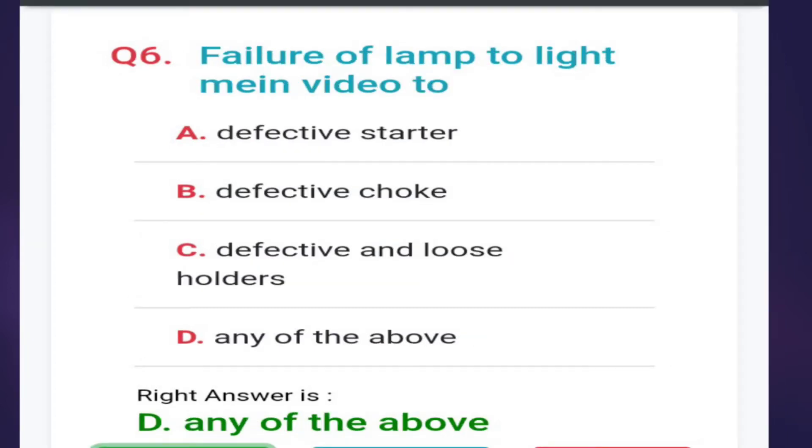Sixth: failure of lamp to light may be due to - options are defective starter, defective choke, defective and loose holders, or any of the above. Answer is option D, any of the above.